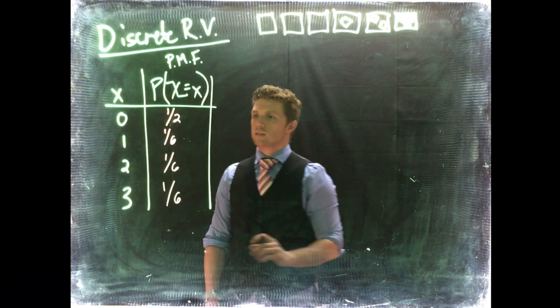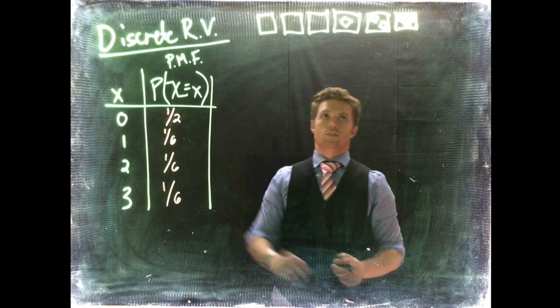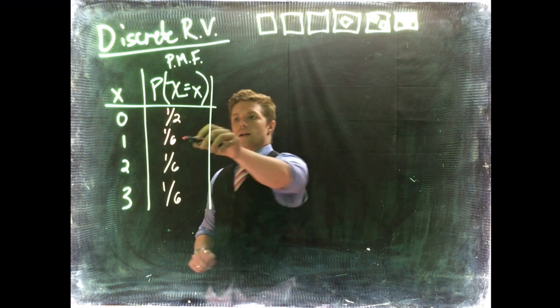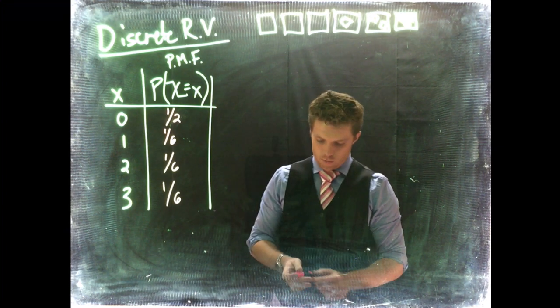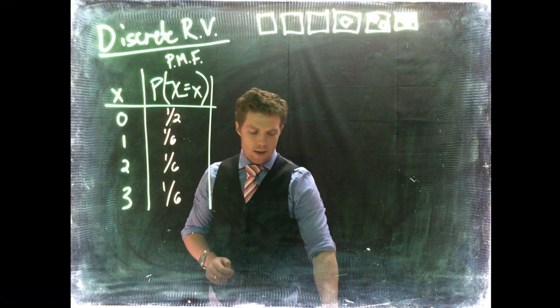Which means that every time we roll the dice, 50% chance of getting a zero, one out of six for one, one out of six for two, one out of six for three. All right, so that's known as our probability mass function.